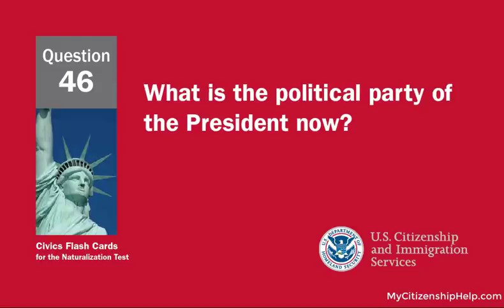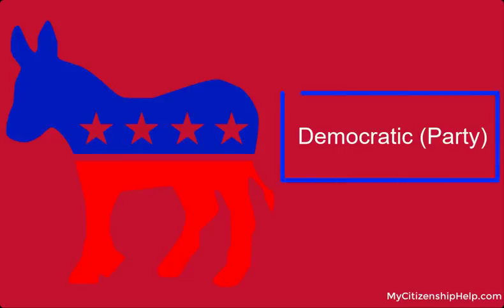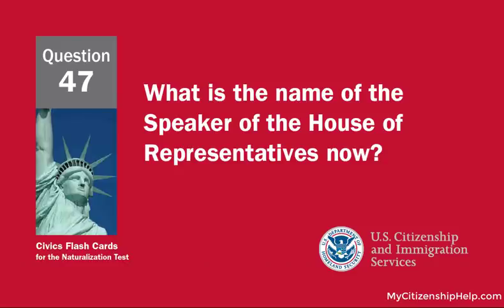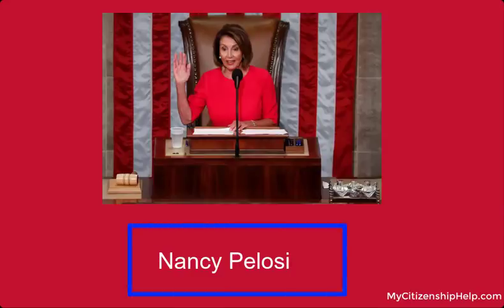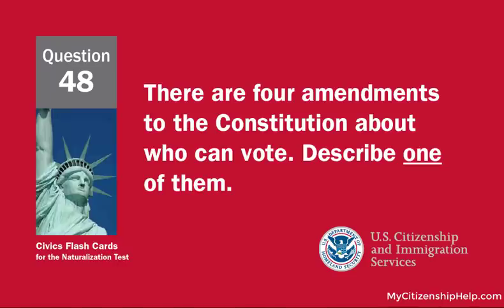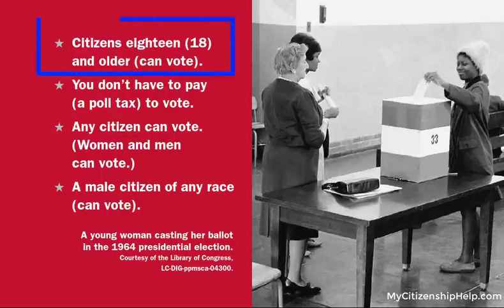What is the political party of the president now? Democratic Party. What is the name of the speaker of the House of Representatives now? Nancy Pelosi. There are four amendments to the Constitution about who can vote. Describe one of them. Citizens 18 and older can vote.